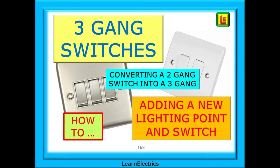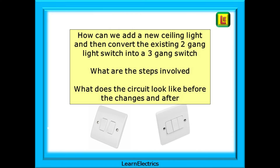Adding lights and changing light switches will often come up as questions in group discussions. In this video from Learn Electrics we will look at installing a new ceiling rose and changing a two-gang switch into a three-gang. How can we add a new ceiling light and convert the existing two-gang light switch into a three-gang switch? What are the steps involved and what does the circuit look like before the changes and after?